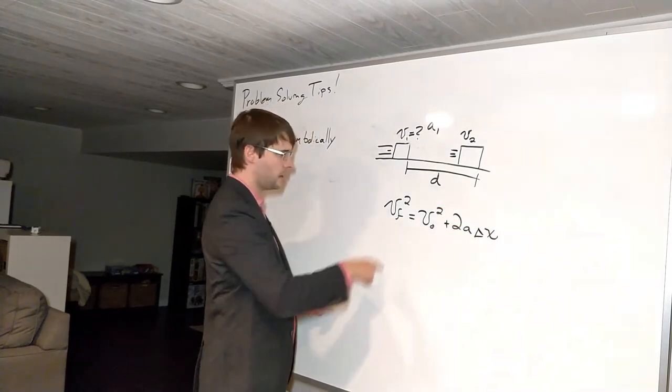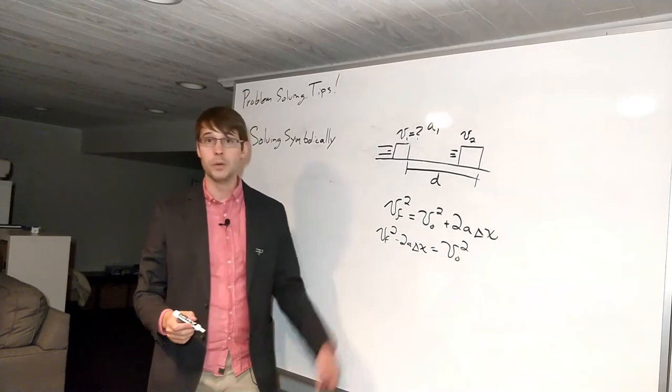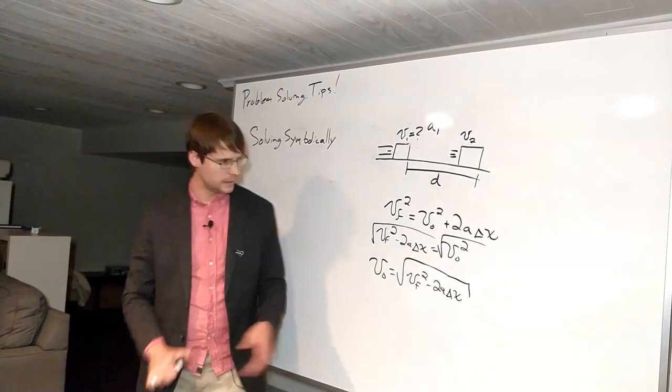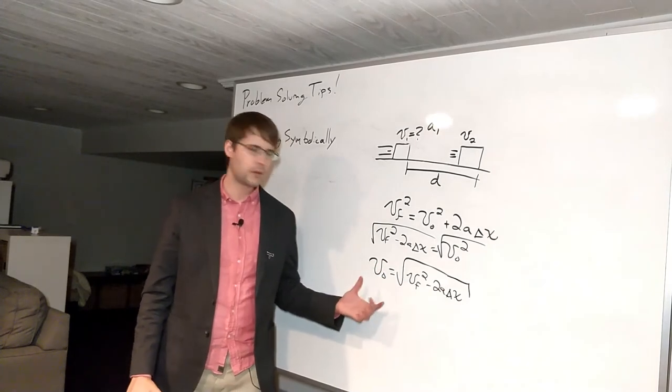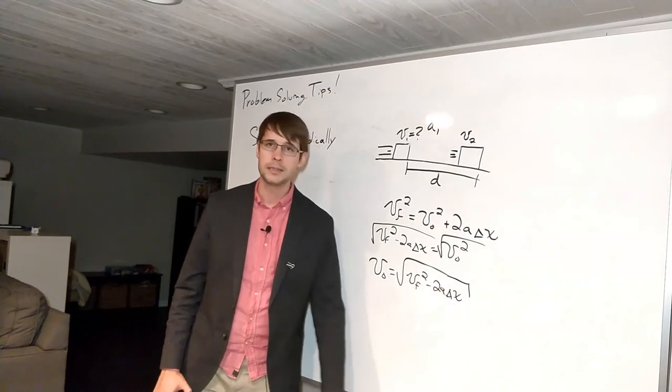First take this, bring it over there, then we'll take the square root of both sides, and this right here is a general equation that tells you the initial velocity if you know the final velocity, acceleration, and displacement.